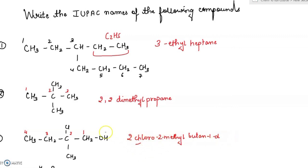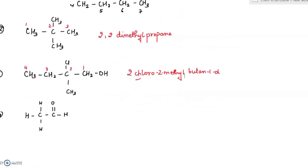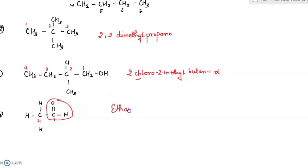Next: start numbering from the side with the functional group -OH. There is a chloro group and a methyl group. Alphabetically, C comes first, so write 2-chloro first, then 2-methyl — the name is 2-chloro-2-methylbutanol.